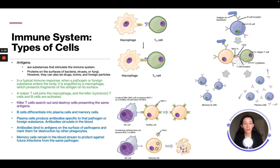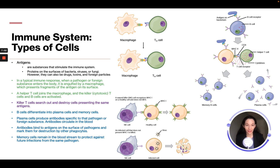For example, when women are pregnant, their blood can have a certain type of antigen. If the mother doesn't have the antigen but the baby does because they got that gene from the father, the mother's body — especially in a second child — can attack the baby unless certain medication is given. That's an example of an antigen on a blood cell. In a typical immune response, when a pathogen or foreign substance enters the body, it is engulfed by a macrophage, which presents fragments of the antigen on its surface, and a helper T cell joins the macrophage, activating killer cytotoxic T cells and B cells.